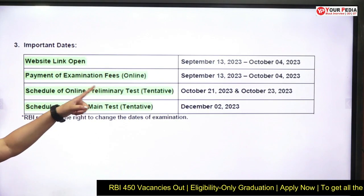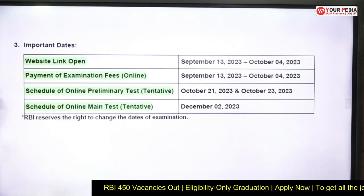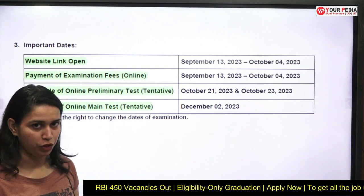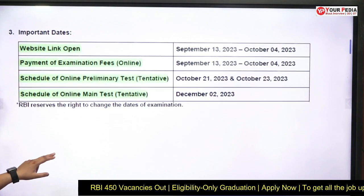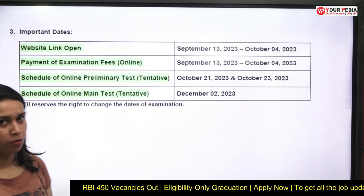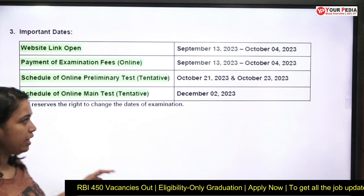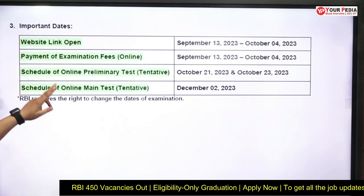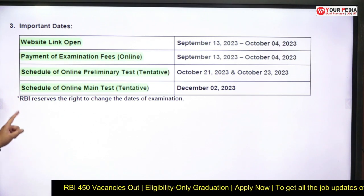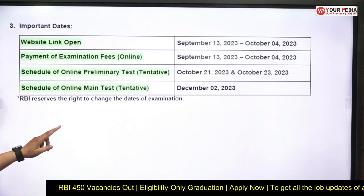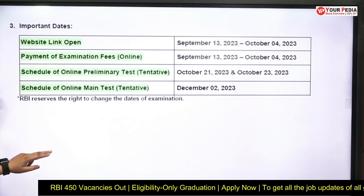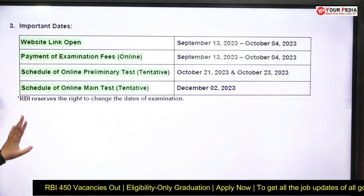The important dates to keep in mind: the application started on 13th September 2023. The deadline to apply is 4th October 2023. The payment of examination fees is also till 4th October. The schedule for the online preliminary test will be on October 21 or October 23 — this is tentative.